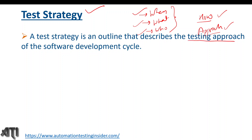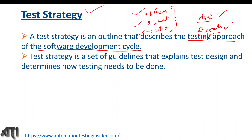A test strategy is an outline that describes the testing approach of the software development life cycle. It is a set of guidelines that explains test design and determines how testing is to be done. So the basic difference is: test plan covers when to test, what to test, and who will test, whereas test strategy covers how the testing should be carried out — what is the approach.